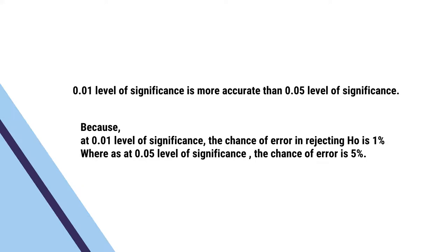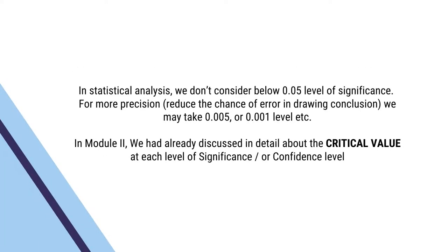At 0.01 level of significance, the chance of error in rejecting the null hypothesis is only 1%, whereas at 0.05 level of significance the chance of error is 5%. In statistical analysis, we do not consider levels below 0.05 level of significance. For more precision and to reduce the chance of error in drawing conclusions, we may take 0.005 or 0.001 level. In module 2, we had already discussed the critical value at each level of significance or at each confidence level.